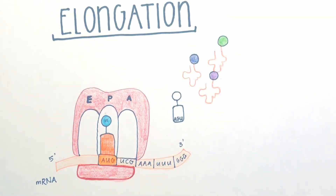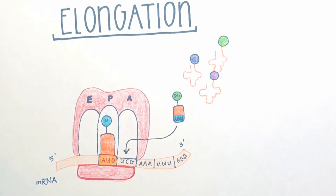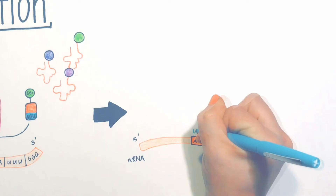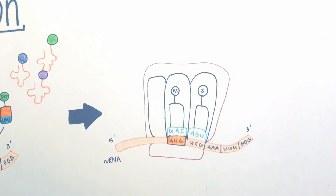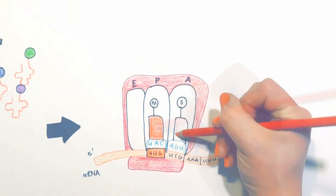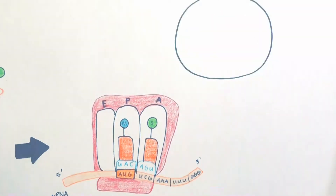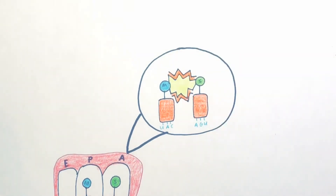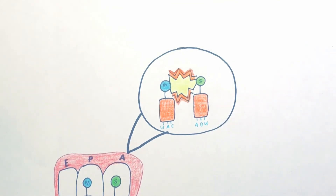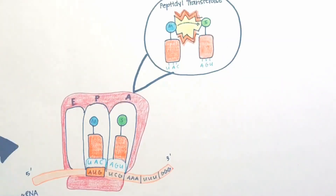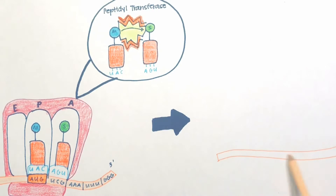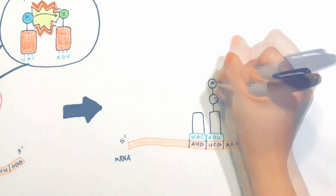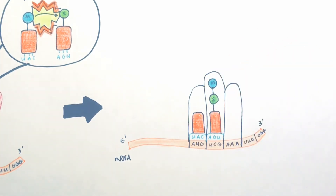A new tRNA carrying an amino acid enters the A-site of the ribosome. The anticodon of the incoming tRNA is matched against the mRNA codon positioned in the A-site. When the right charged tRNA enters the A-site, a peptide bond is made between the two adjacent amino acids — this is called peptidyl transferase. As the peptide bond is formed, the tRNA in the P-site releases the amino acids onto the tRNA in the A-site and becomes uncharged. At the same time, the ribosome moves one codon forward on the mRNA strand. As a result, the now uncharged tRNA is in the E-site and the peptidyl tRNA is in the P-site.